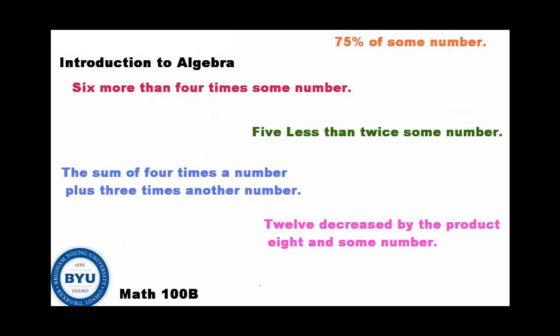Okay. So here are one, two, three, four, five problems. We'd like you to take out your notebook, write down these five problems, and then translate them into their math equations. The first one is 75% of some number. The next one, six more than four times some number. The next one, five less than twice some number. The one after that here in blue is the sum of four times a number plus three times another number. And the last one is 12, decreased by the product of eight and some number. The of got cut off there, but that's of eight and some number. Okay. Pause the video. Good luck. And push the play button when you're ready to resume.